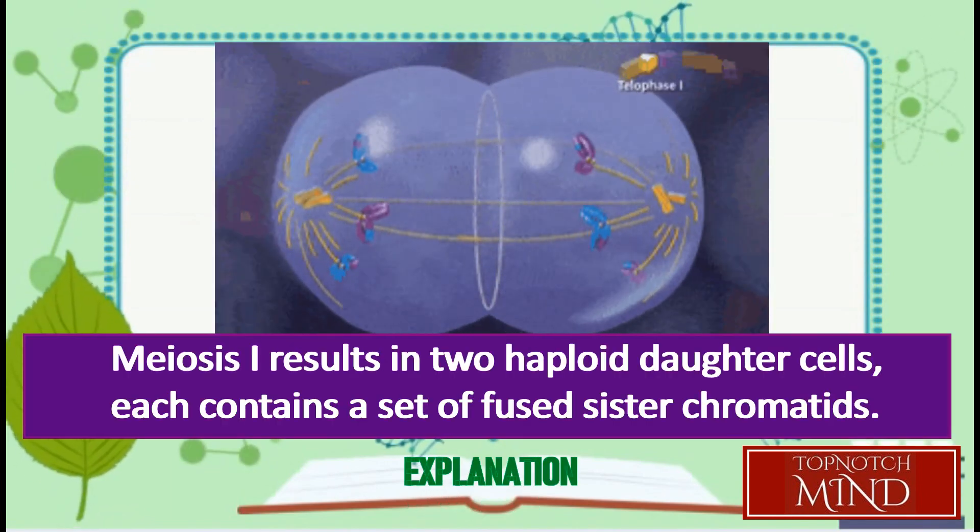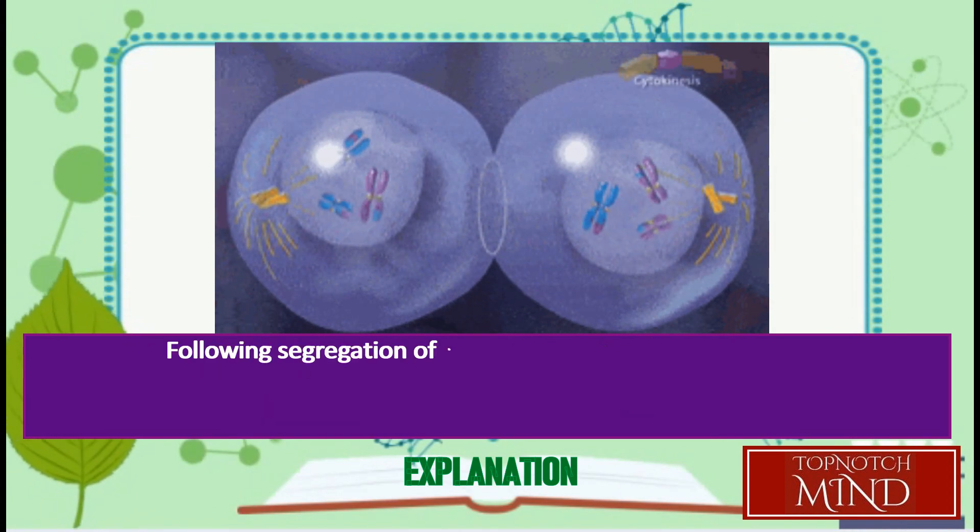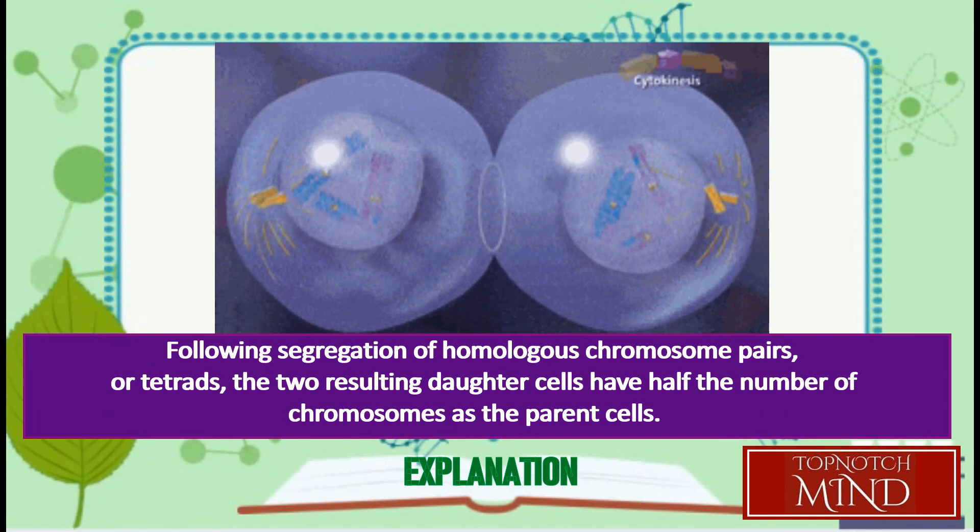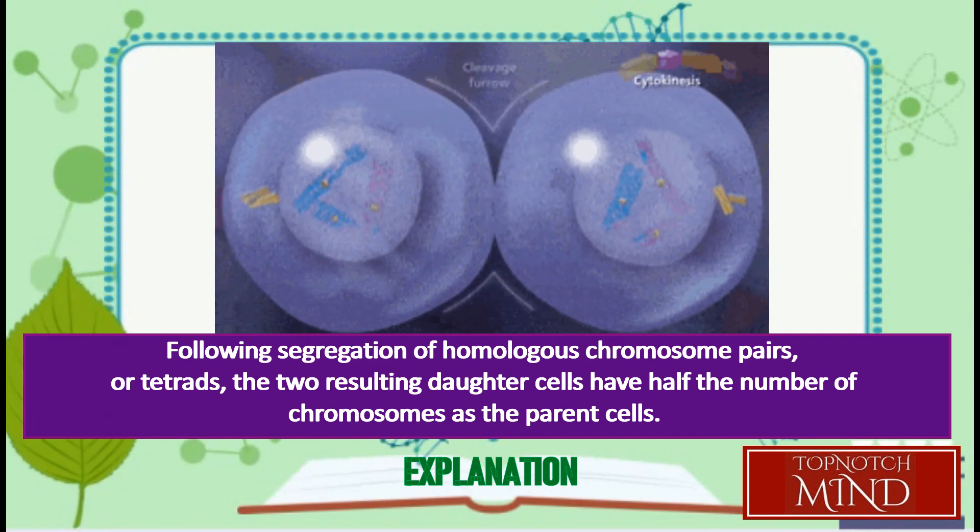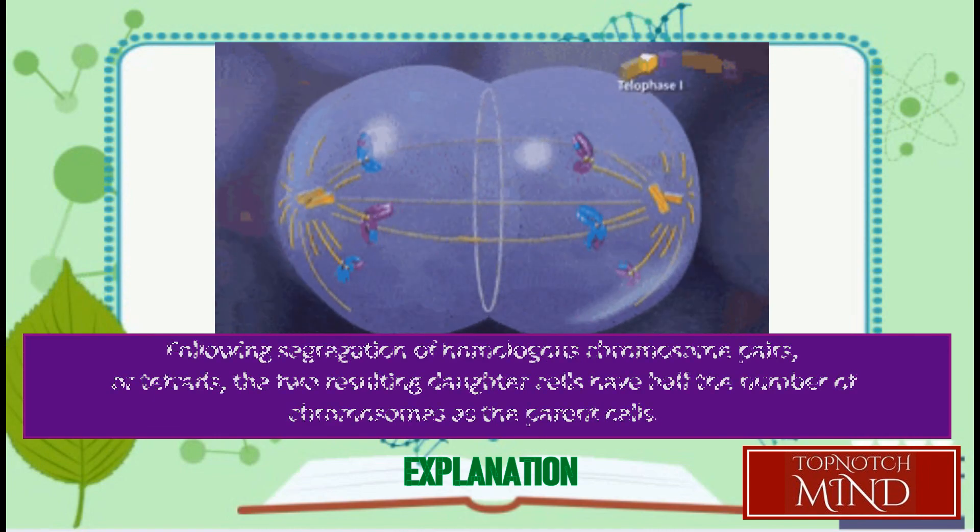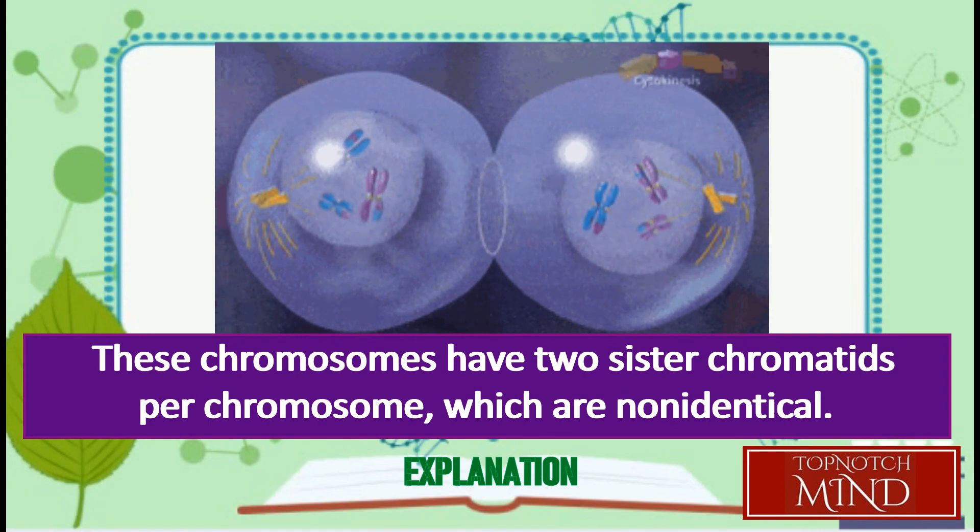Meiosis 1 results in two daughter cells, each of which contains a set of fused sister chromatids. Following segregation of homologous chromosome pairs, or tetrads, the two resulting daughter cells have half the number of chromosomes as the parent cell. These chromosomes have two sister chromatids per chromosome, which are non-identical due to crossing over.